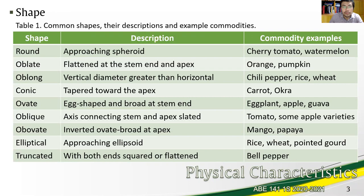Ovate egg shape and broad at stem end we have the eggplant or aubergine, apples and some varieties of apples and guava. Oblique axis connecting stem and apex are slated we have tomato and some apple varieties.